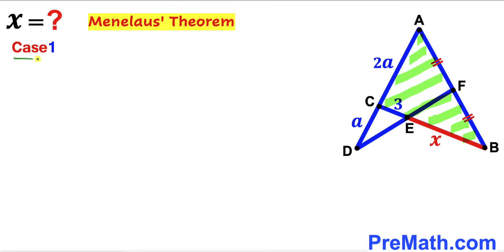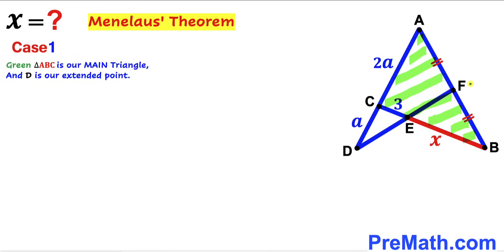In case one, we are going to focus on triangle ABC — I'm going to keep it as a green triangle. In other words, this green triangle ABC is our principal triangle and point D is our extended point. Our Menelaus' theorem flowchart always starts from this extended point.